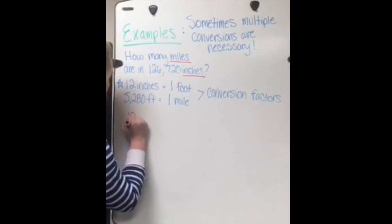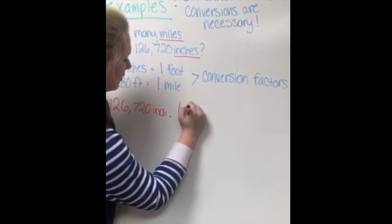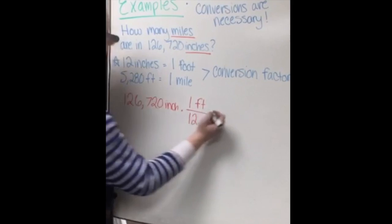So we start off with what we know, which is 126,720 inches. And we multiply that by 1 foot over 12 inches. We put the inches on the bottom so that we can cancel these two out.